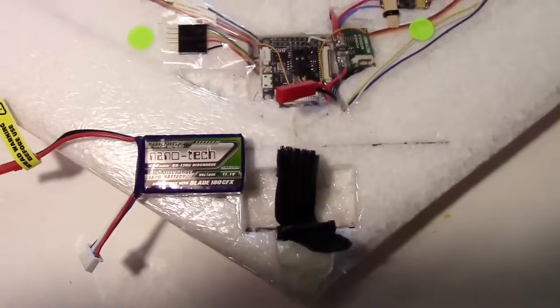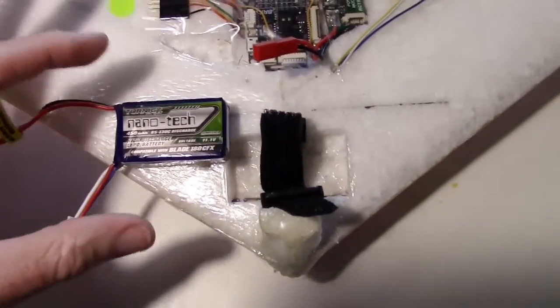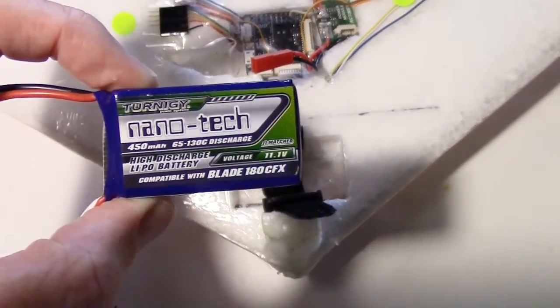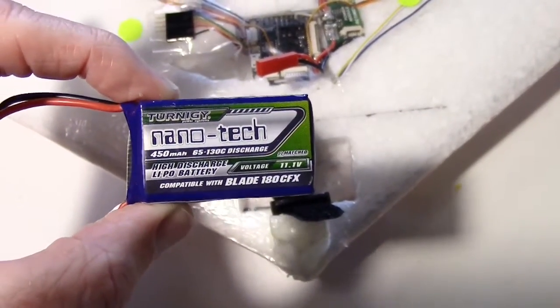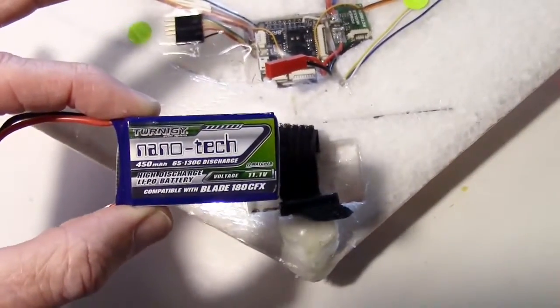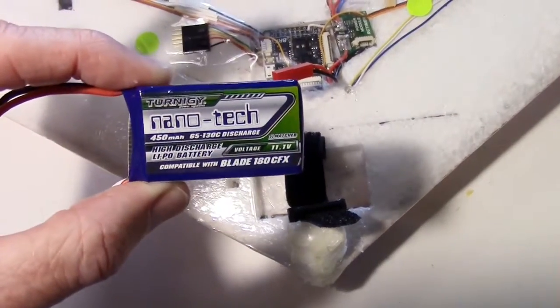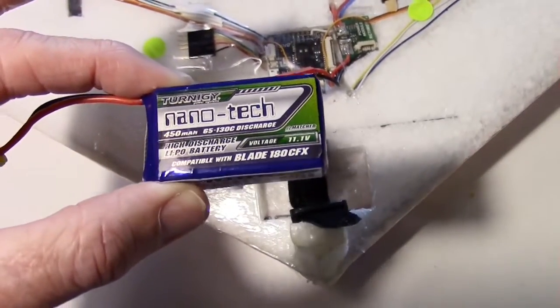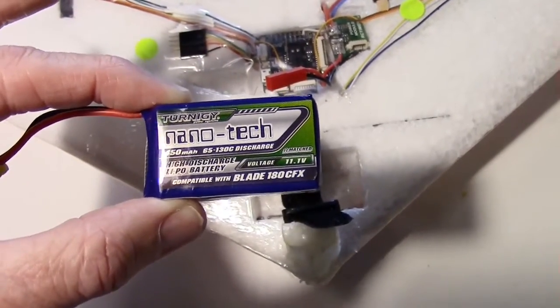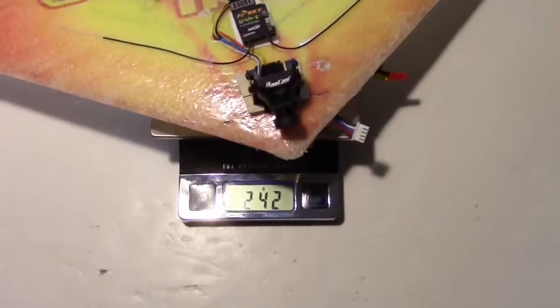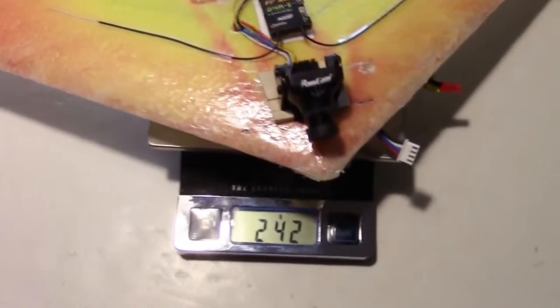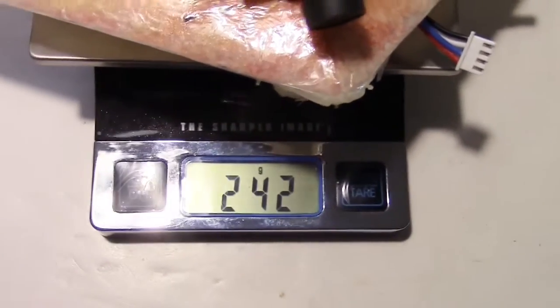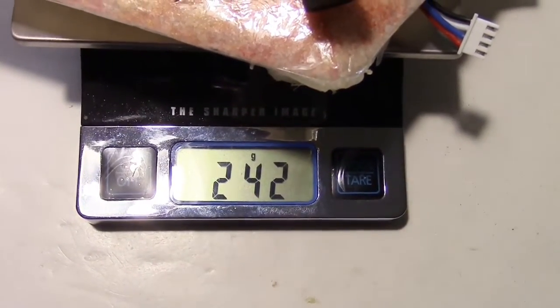To keep the plane under 250 grams, you can use a 450 nanotech 3-cell. That's 450 milliamps 3-cell nanotech. It cuts your flight time down from about 20 minutes to about 10 minutes, but it does get you under the 250 grams if you're concerned about being registered with the FAA. Here's the weight with the 450 milliamp hour 3-cell. And it's 242 grams.